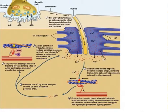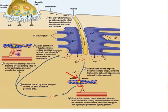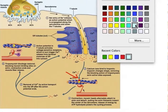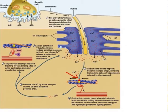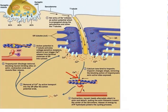Now we're going to talk about the cessation of a muscle contraction. First we're going to need to get the calciums off the troponins. We have calcium pumps on the sarcoplasmic reticulum. These calcium pumps work as a suction using ATP and they will pull the calcium from the sarcoplasm back into the sarcoplasmic reticulum.